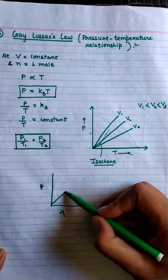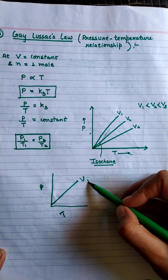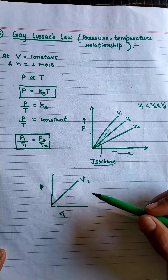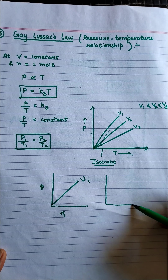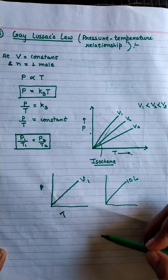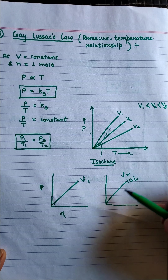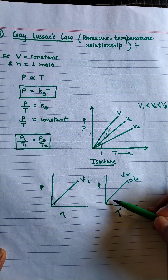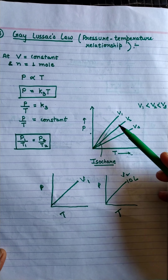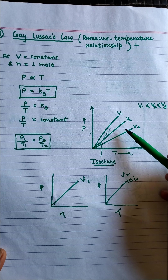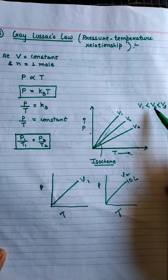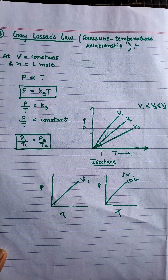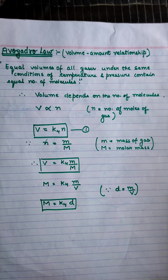When we consider V1 as 5 liters and observe pressure and temperature, we get a straight line graph. Then taking V2 as 10 liters and observing pressure and temperature, they increase considerably. All these different volumes are denoted in the same graph, where V3 > V2 > V1. This is Gay-Lussac's law. The next law is Avogadro's law.